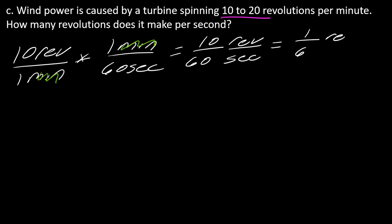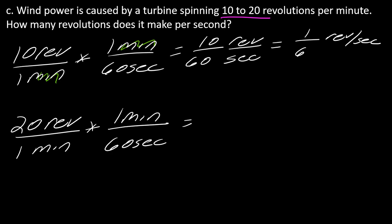If I do the other one, 20 revolutions in one minute. In one minute there are 60 seconds, so this will come out to 20 revolutions in 60 seconds. If I simplify this, this comes out to one-third of a revolution per second.